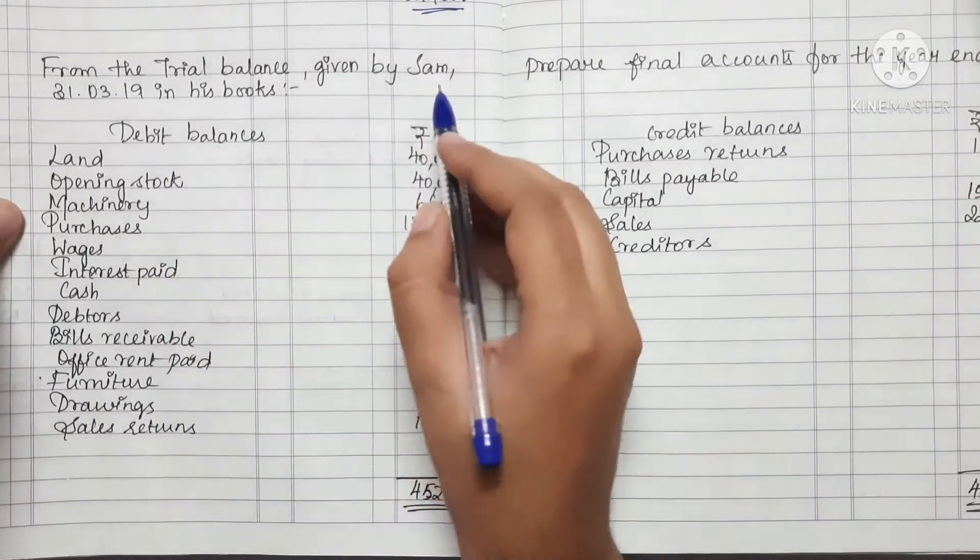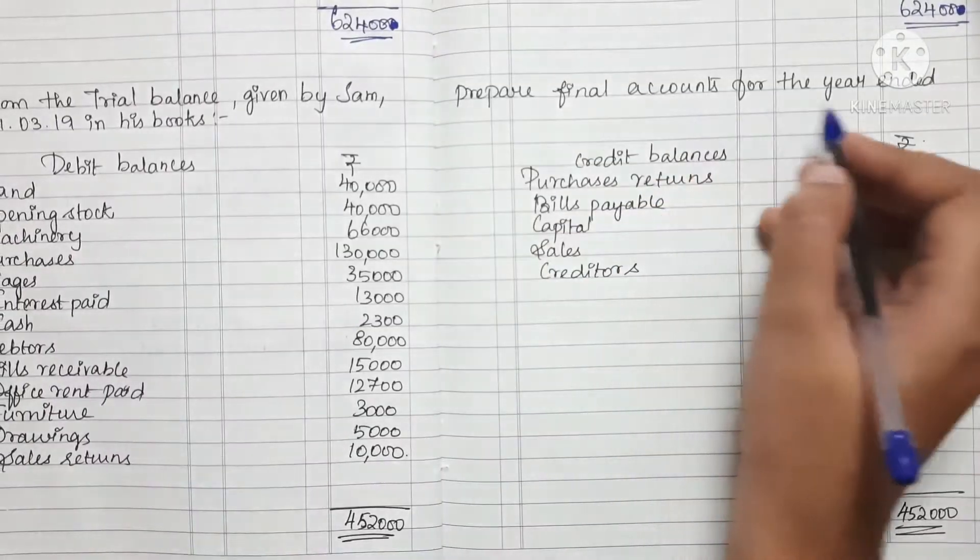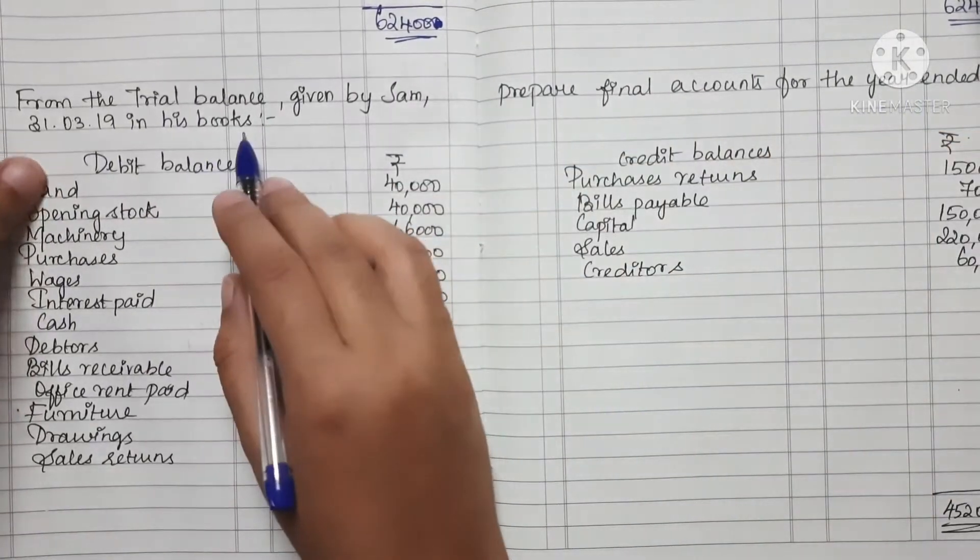From the trial balance given by Sham, prepare final accounts for the year ended 31-12-2019 in his book.